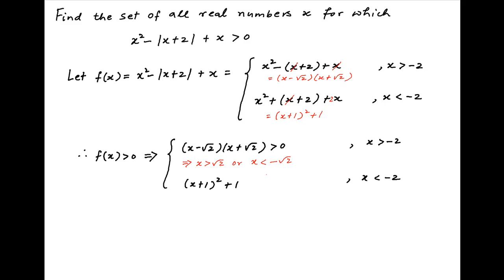The first case implies that x is greater than root 2 or x is less than minus root 2. In the second case, the expression for f(x) is positive for all values of x, because x plus 1 whole square is always a positive number.